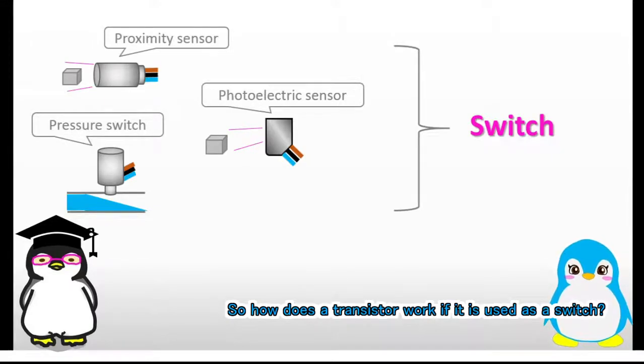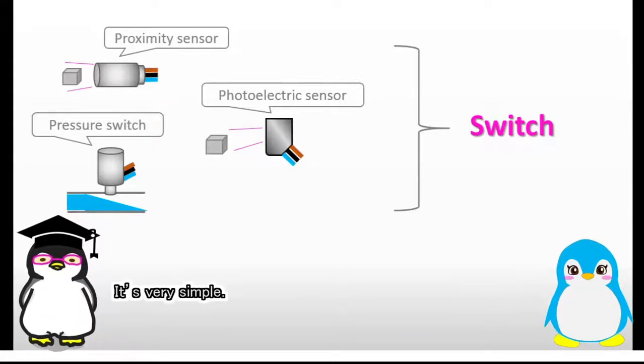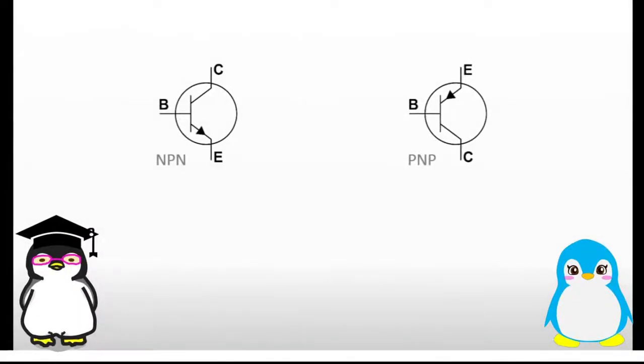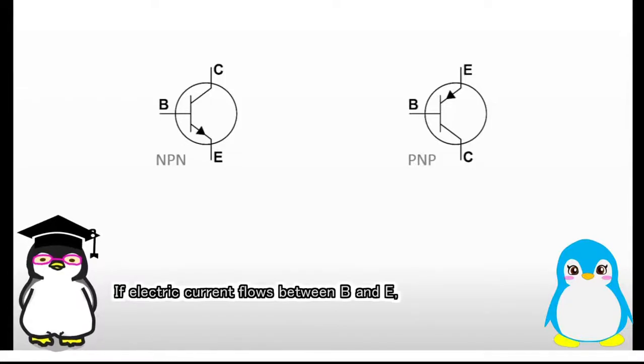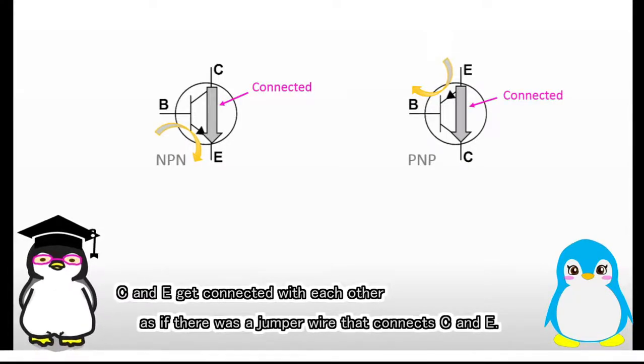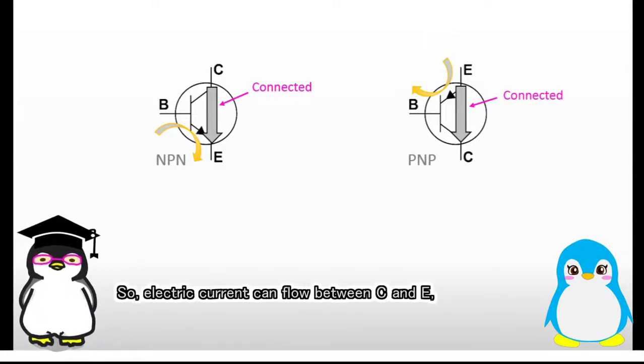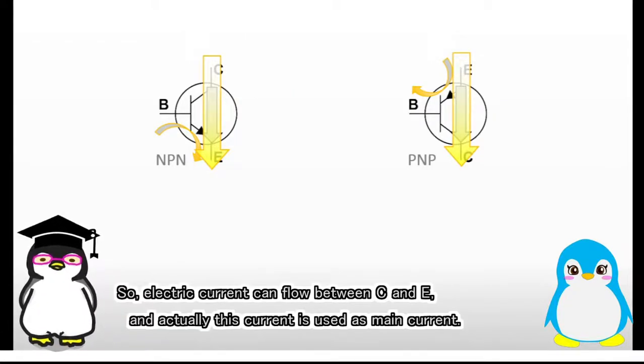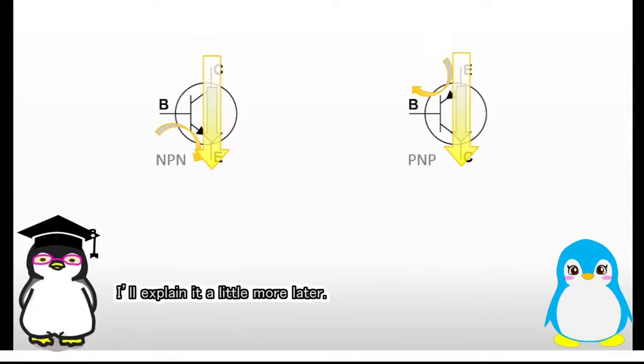So how does a transistor work if it is used as a switch? It's very simple. If electric current flows between B and E, C and E get connected with each other as if there was a jumper wire that connects C and E. So electric current can flow between C and E. And actually, this current is used as main current. I'll explain it a little more later. This is how a transistor works as a switch.